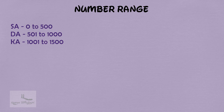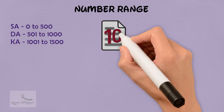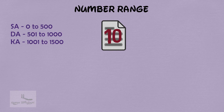For example, you can assign the number range 0 to 500 for document type SA, 501 to 1000 for document type DA, and 1001 to 1500 for document type KA. So whenever a business transaction is posted, its document number is picked from the respective range, making it easy to identify the document type just by looking at the document number.